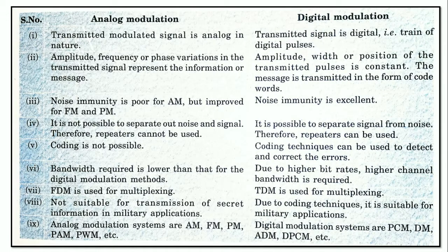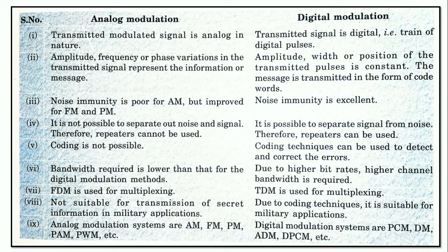In analog modulation, coding is not possible, whereas in digital modulation, coding techniques can be used to detect and correct errors. In analog modulation, the bandwidth required is lower than that for digital modulation methods.